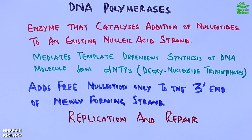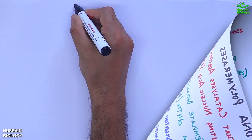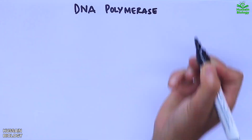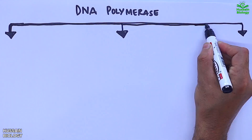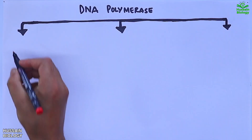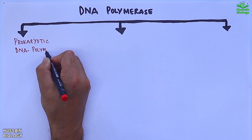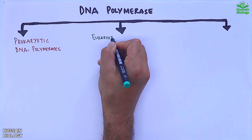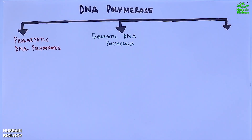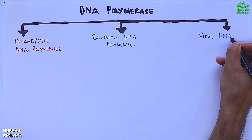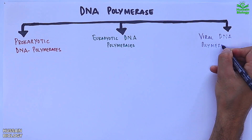Now let's see the classification of DNA polymerases. We have prokaryotic DNA polymerases, eukaryotic DNA polymerases, and viral DNA polymerases.